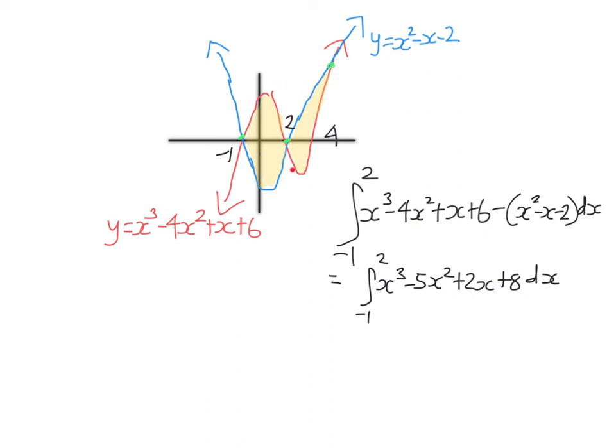So this here is going to be this area here. But now if I want to find that area there, I'm going to need to take the integral from 2 to 4. But it's going to be this time the blue curve minus the red curve because now the blue curve is on top. So the only thing that will change here is the signs. Each of these terms will change sign if I do blue minus red rather than red minus blue.